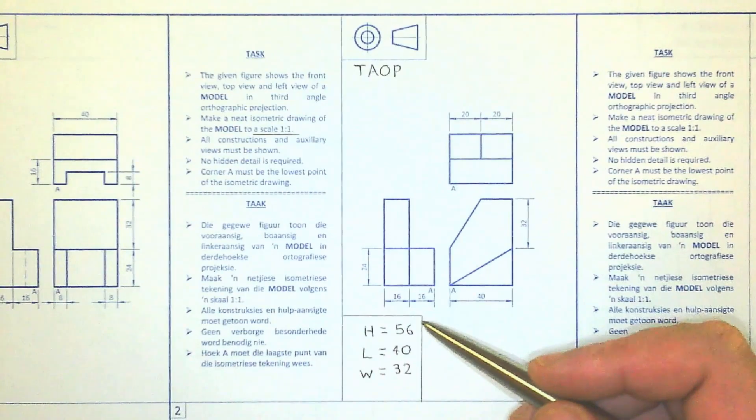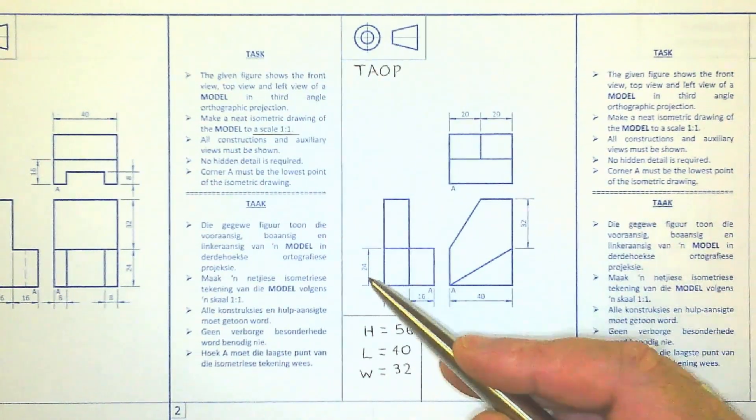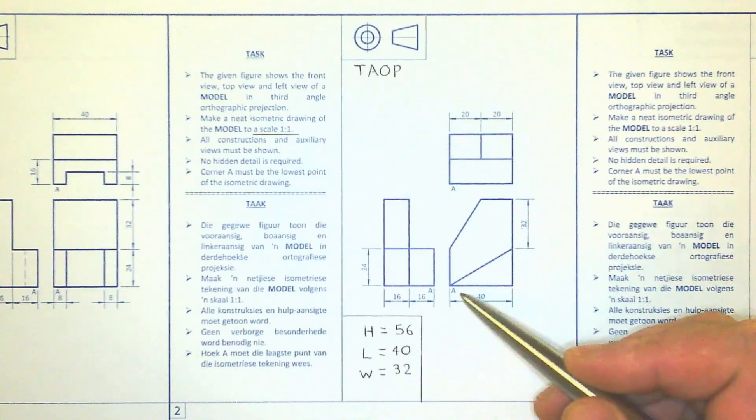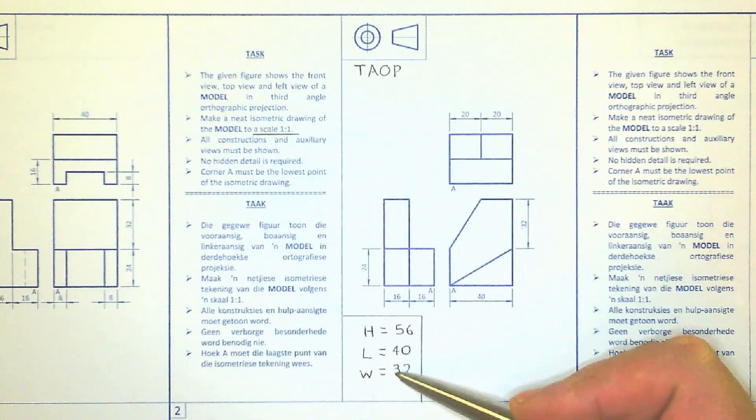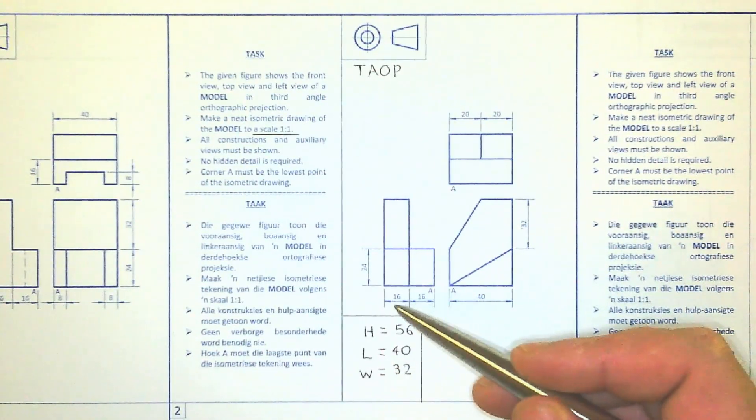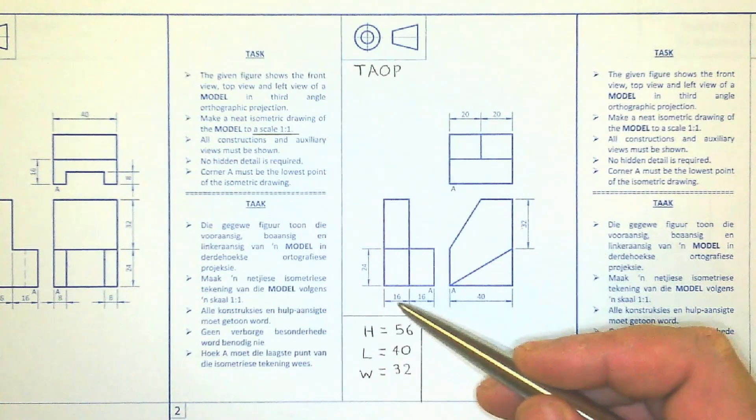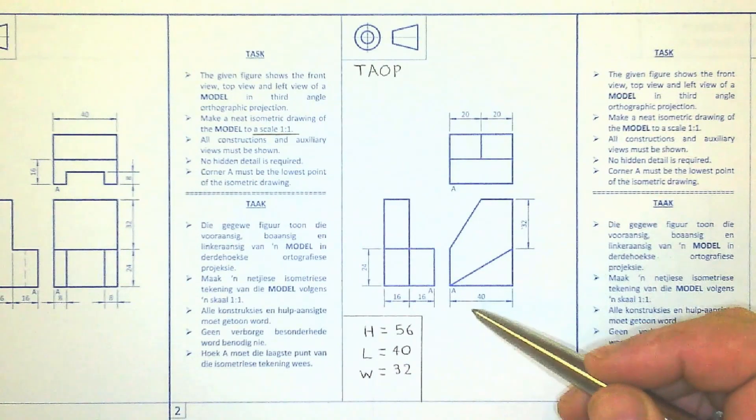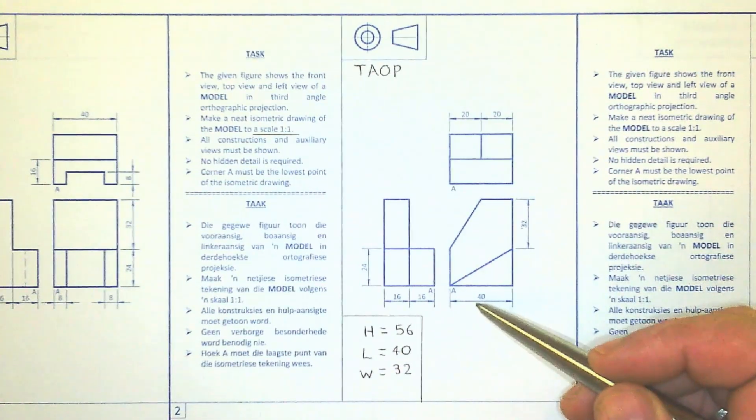So the height is 56 in total, we know that by adding up these two units. The total length is given at 40. And the width we get by adding up the two sixteenths there, which gives us 32. Please keep in mind that the scale is one to one, so the measurements stay exactly what they are on the diagram.